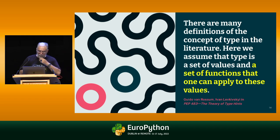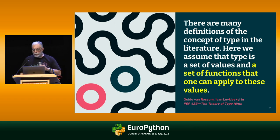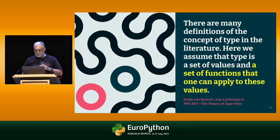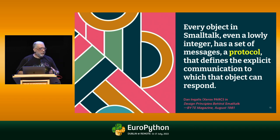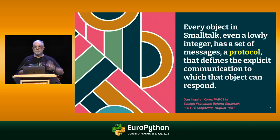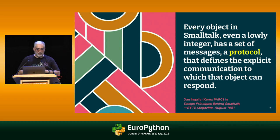From that definition of PEP 483, we adopt the point of view that a type is defined by the set of functions that you can apply to an object. And here's another quote from Smalltalk — and I'm not talking about Smalltalk just because I have a gray beard. The type system of Smalltalk is very similar to the type system of Python, just like the type systems of Ruby and JavaScript.